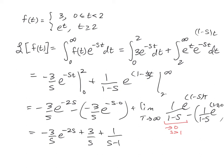And that's e to the 0, which is 1. So we're going to have a Laplace transform that is equal to negative 3 over s e to the negative 2s plus 3 over s plus 1 over s minus 1.